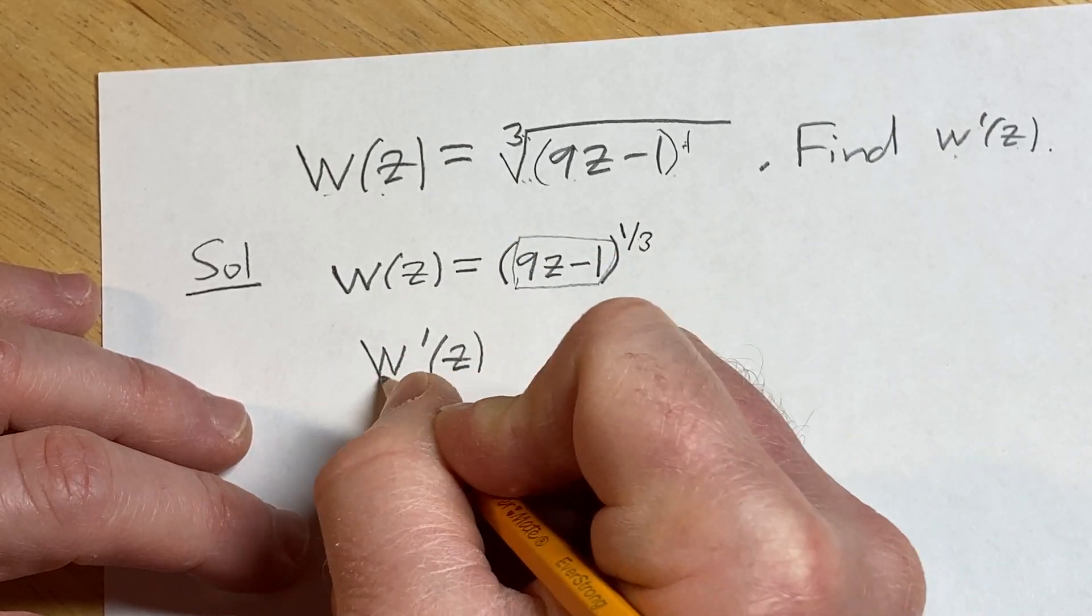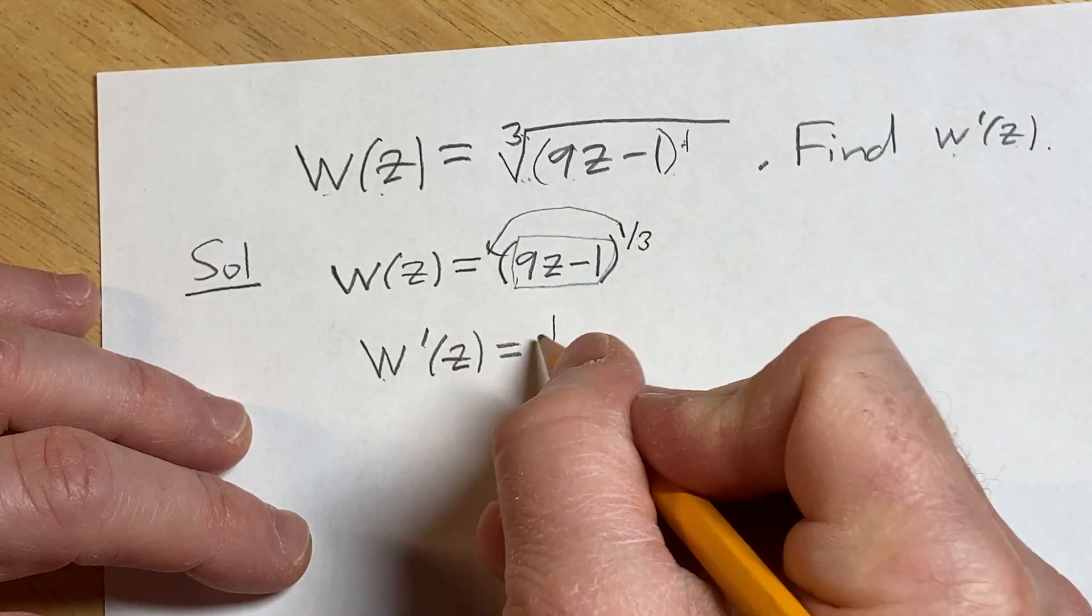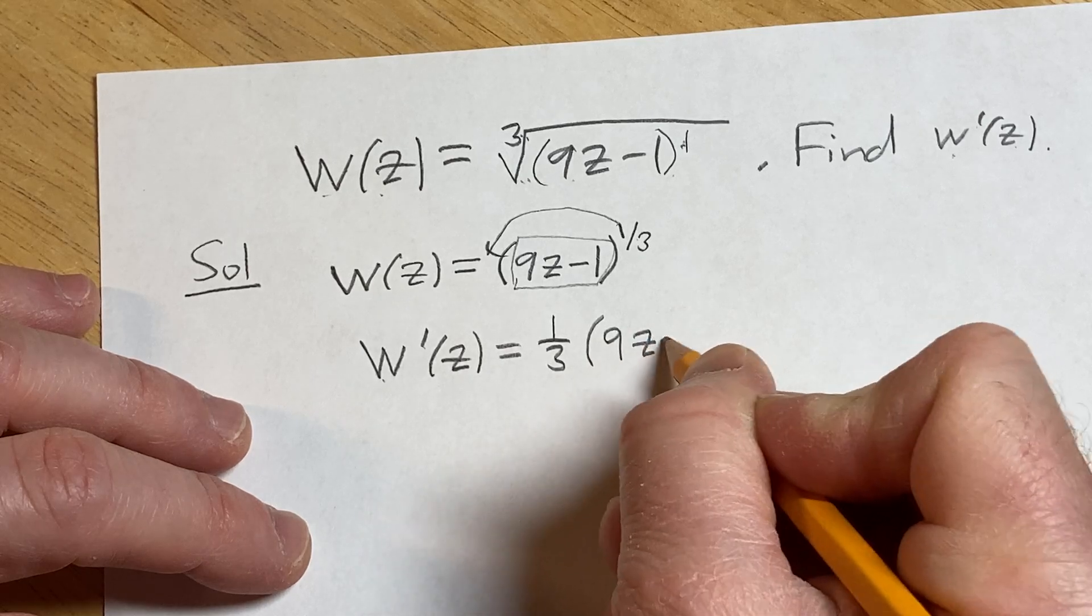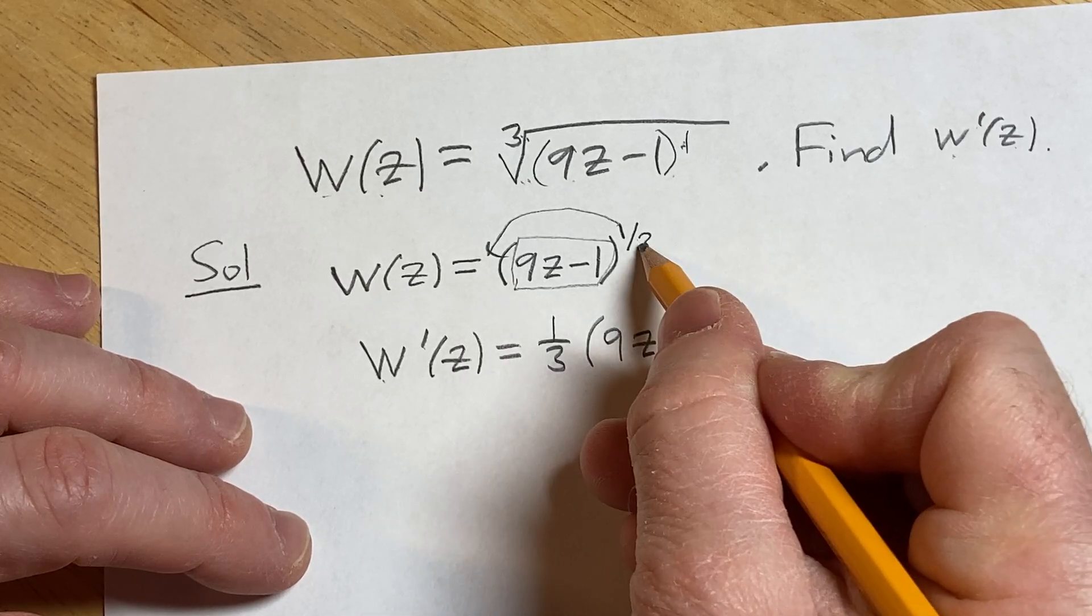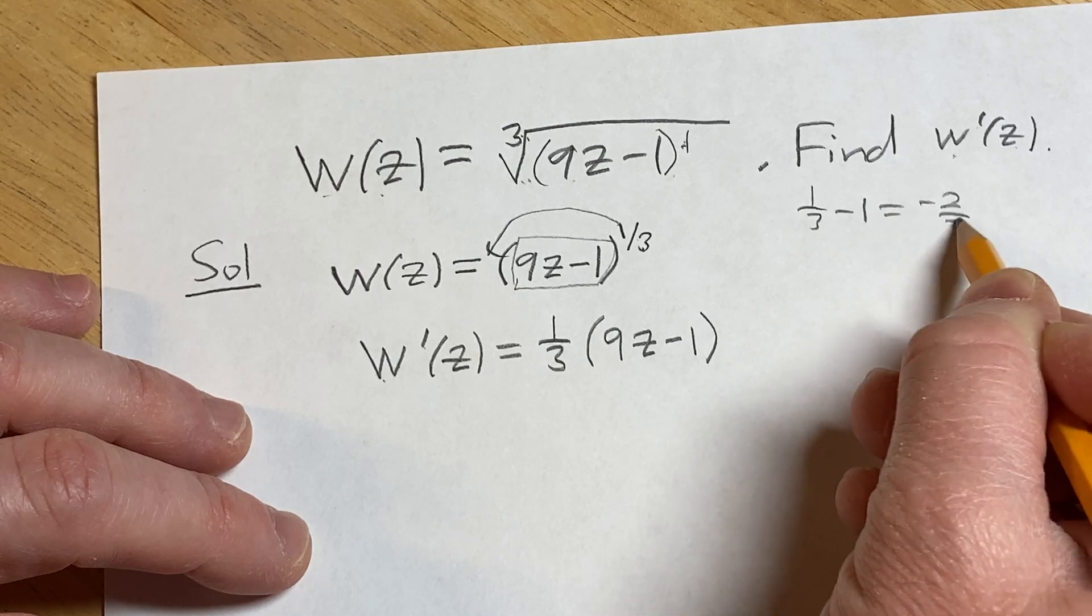Applying the chain rule, w'(z) equals: bring down the 1/3, then (9z - 1), and subtract 1 from the exponent. 1/3 minus 1 is -2/3.